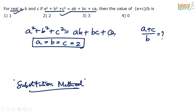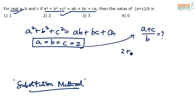We have satisfied both conditions: condition one, that the equation is balanced, and condition two, that A, B, C are real numbers. So if A, B, C are all equal to 2, then (A plus C) divided by B is (2 plus 2) divided by 2, which equals 4 by 2, which is 2. Hence option 2 is correct.